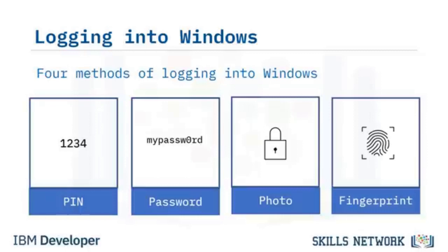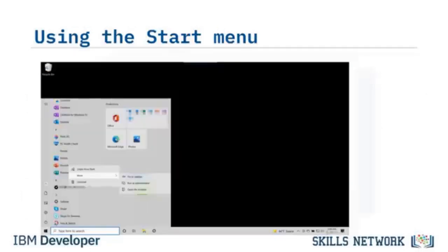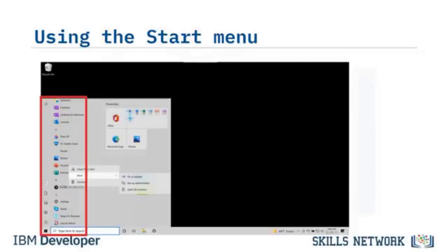Let's check out parts of the Windows desktop. Click the Windows icon to view the Start menu and Productivity pane. On the left side of the Start menu, you can see which user is logged on and shortcuts to documents, pictures, settings, and power management options. Available programs are organized alphabetically.